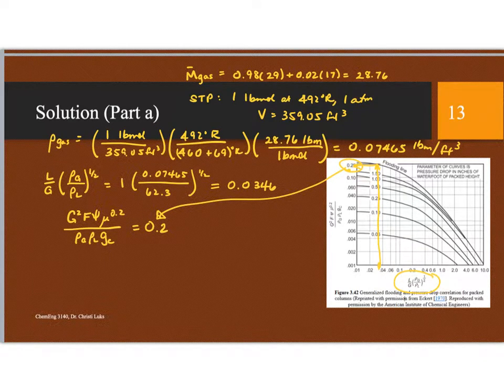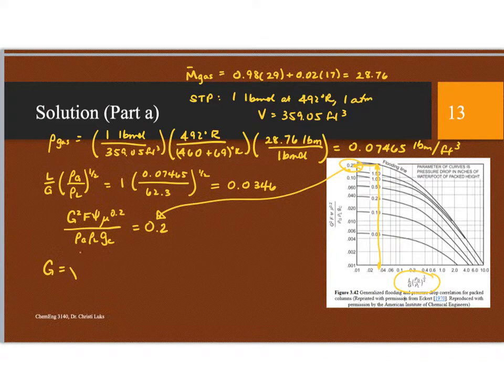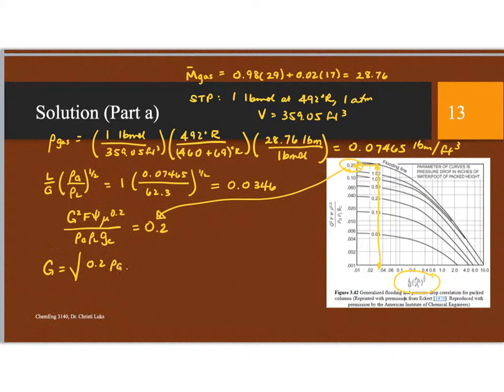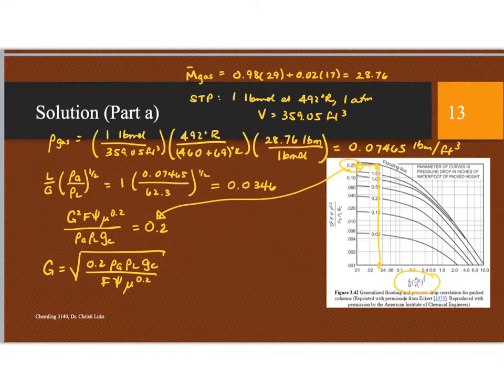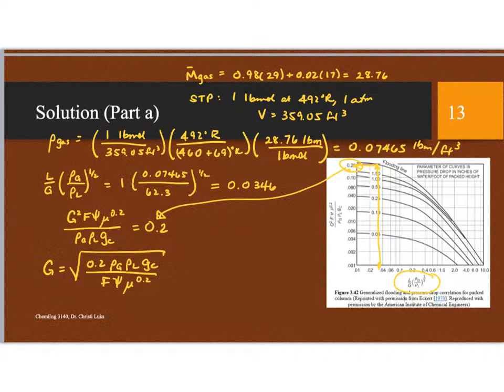And I can use this to solve for G. So G is going to be the square root of 0.2, density of the gas, density of the liquid, G sub C, over the packing factor, psi mu to the 0.2. All right? I have these numbers given. Again, rho sub G is 0.07465, rho sub L is 62.3, G sub C 32.174. The packing factor, we were told that that was 98.